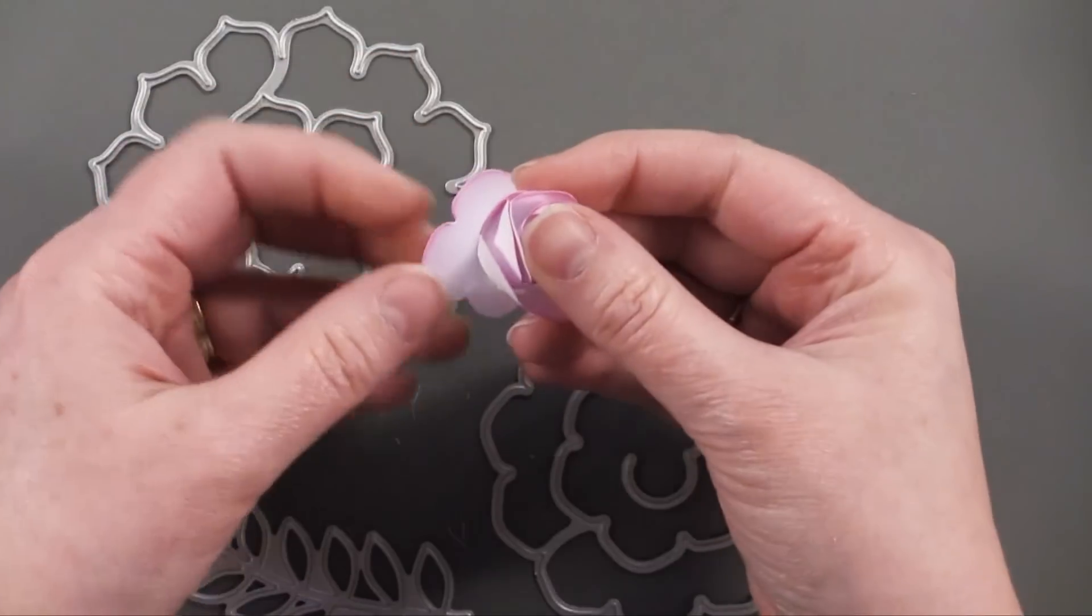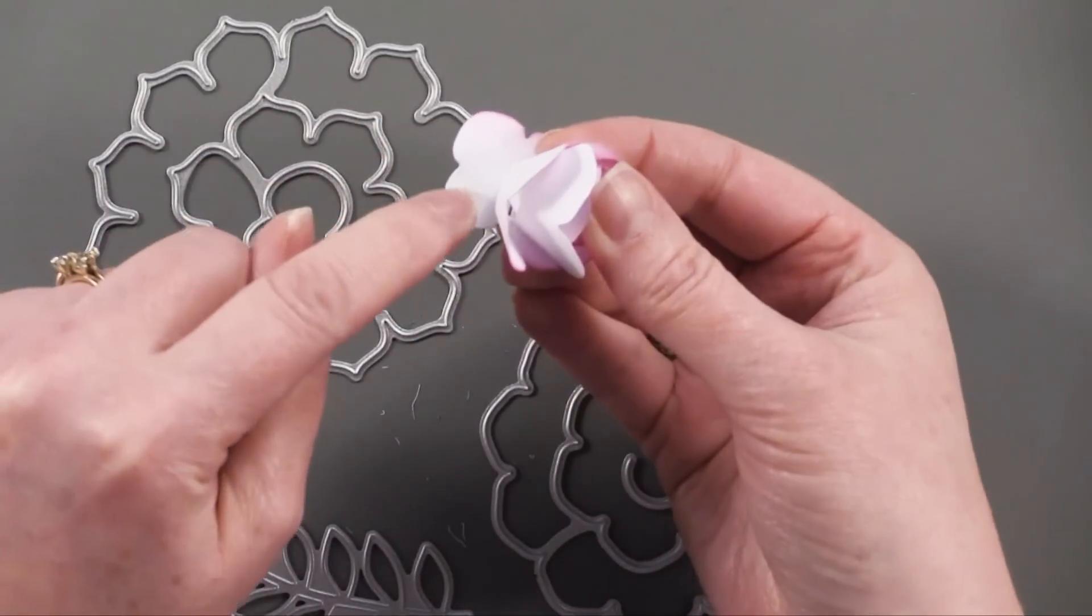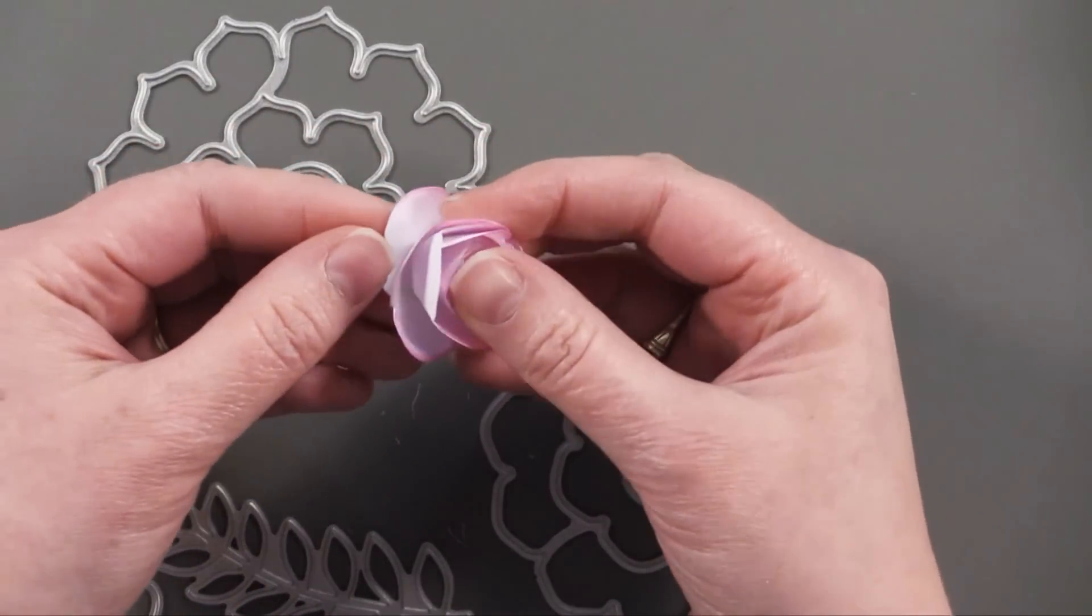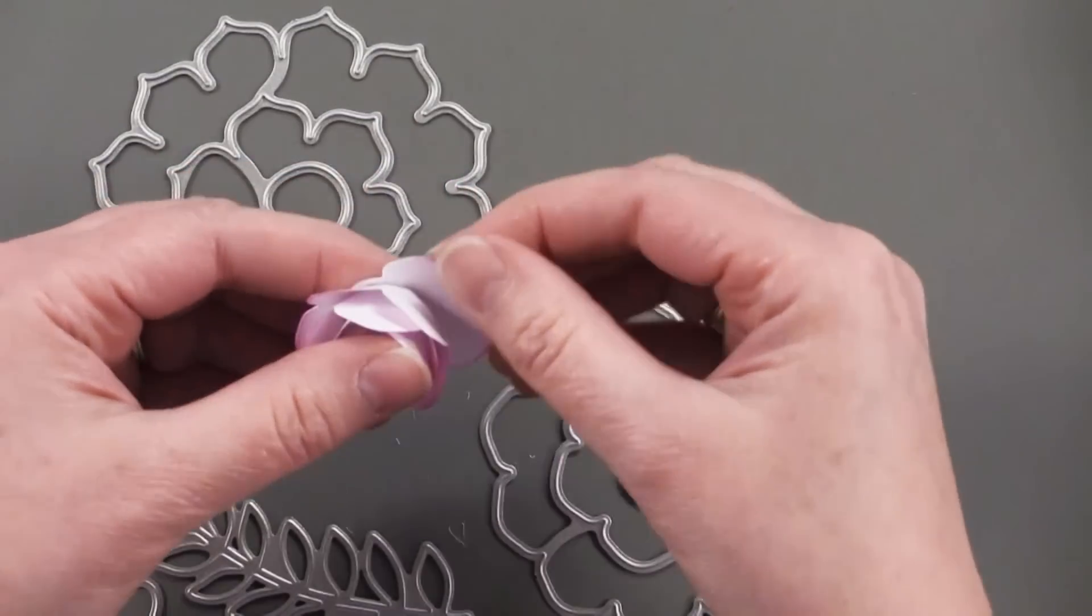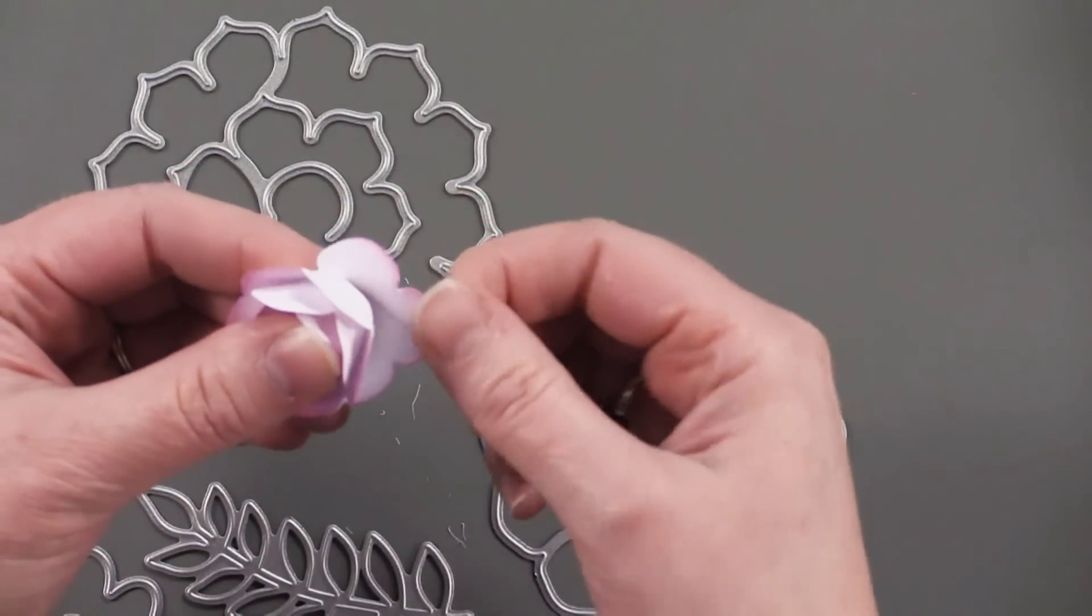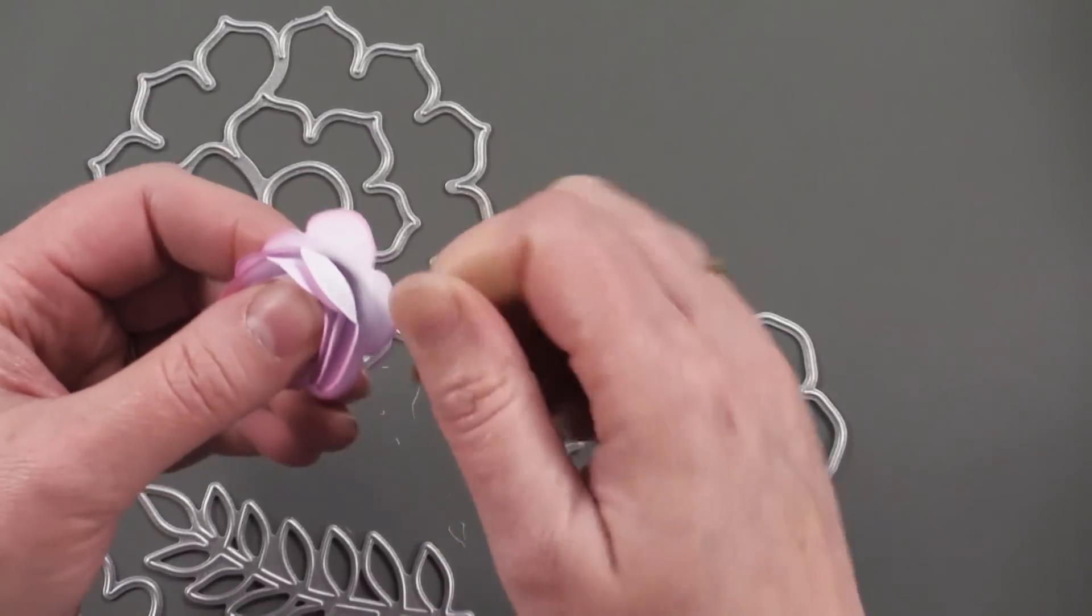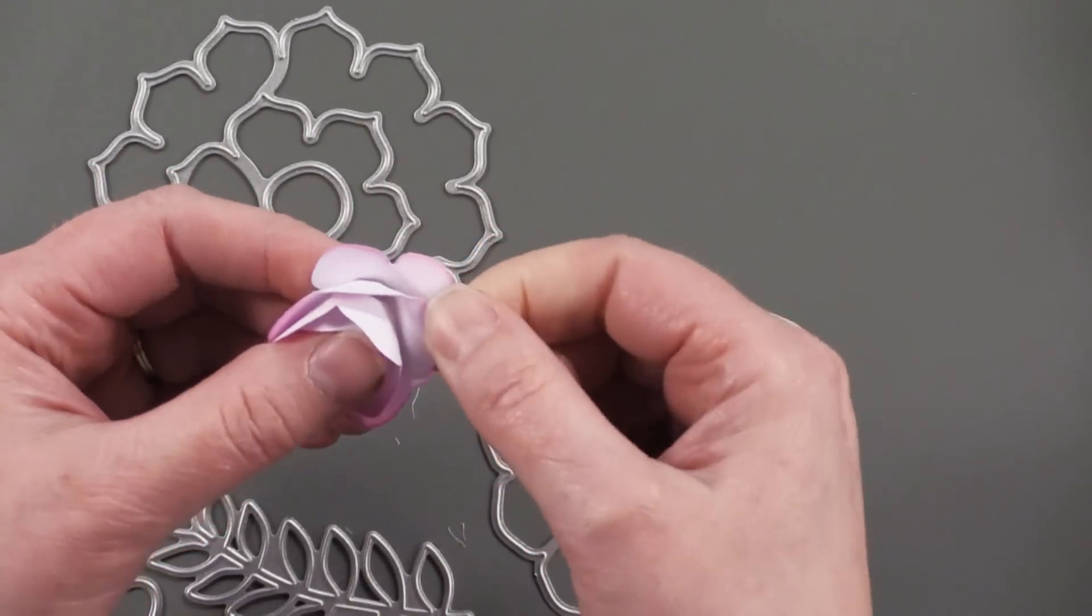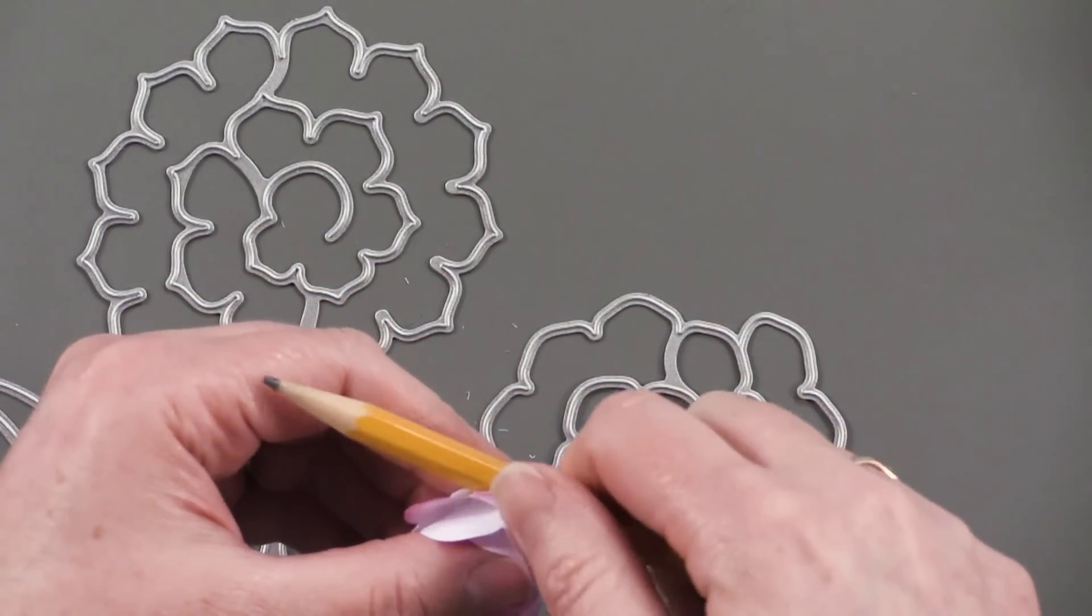So you're going to end at this last piece right here, and you're just going to put a dot of hot glue there, and that will just keep that all in place. And then what I like to do is just go back and curve each one of those petals just to give it a little dimension.